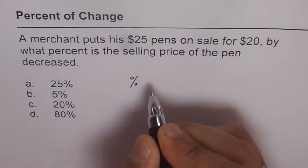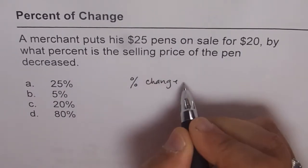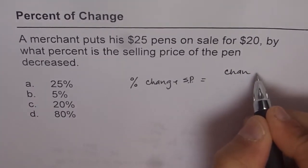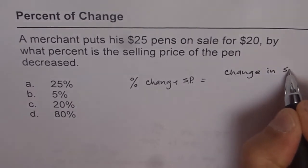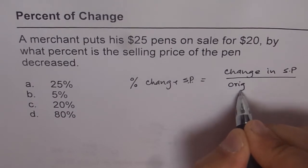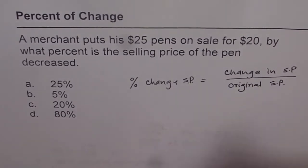So you say percentage change or decrease for that matter of selling price should be equal to change in, or decrease, in selling price over original price. That is kind of important. Original selling price.